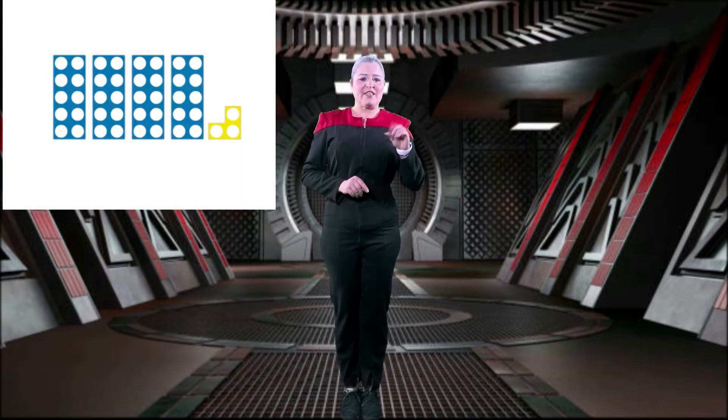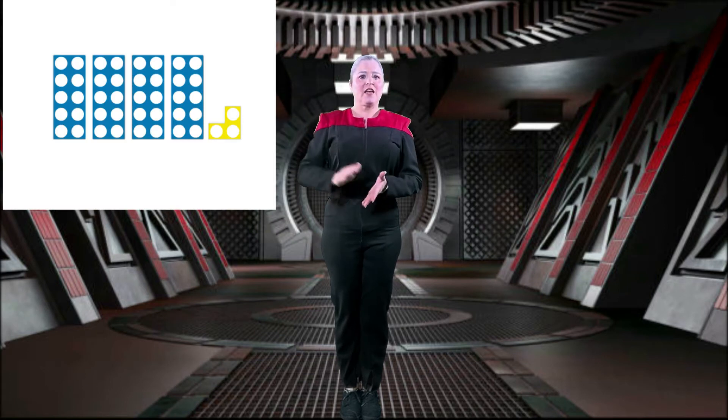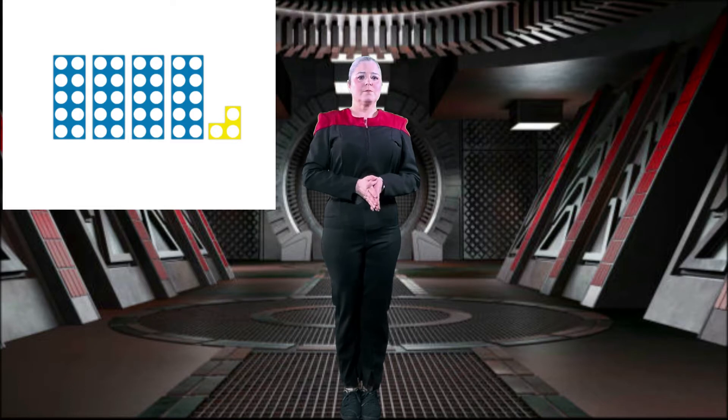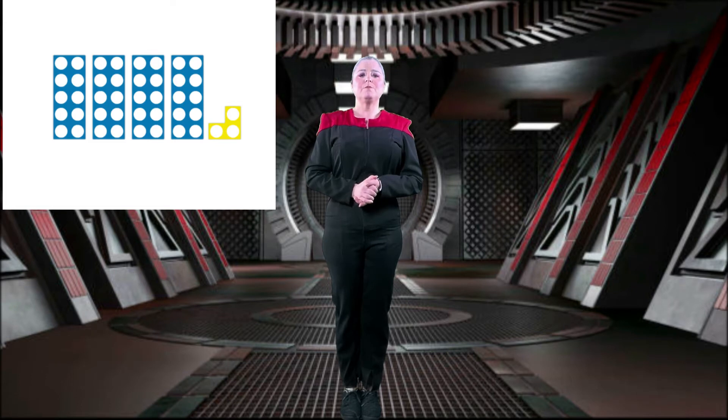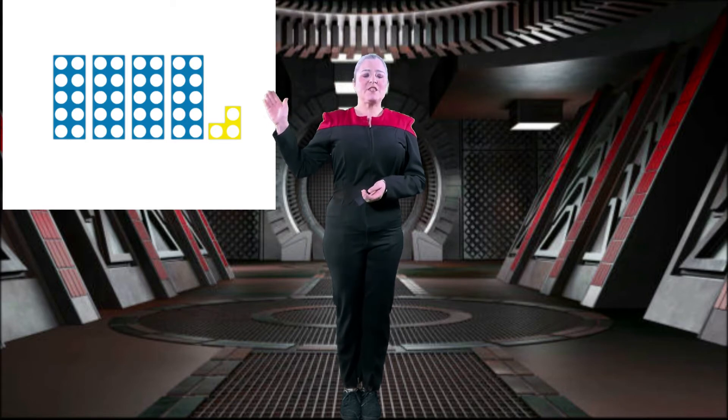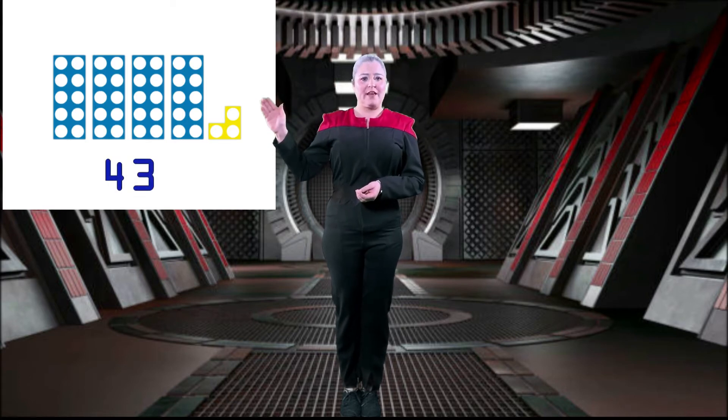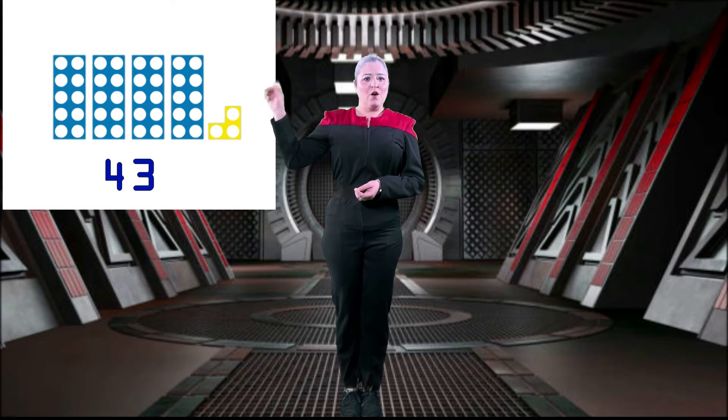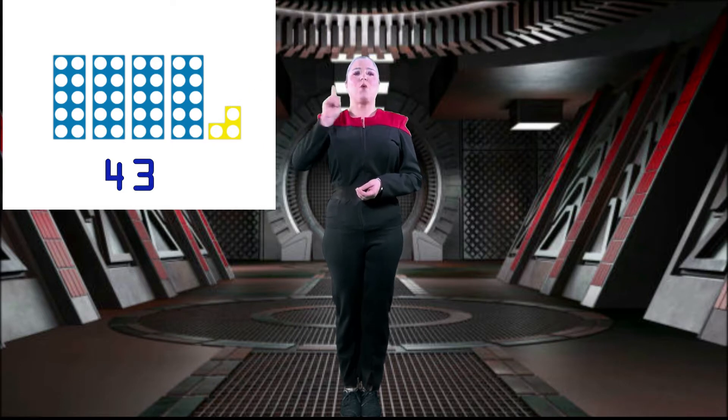Now, look closely at this number. We have our Numicon shapes there. What number do these shapes represent? Correct. These shapes represent the number 43. We have four 10 shapes and one 3 shape.